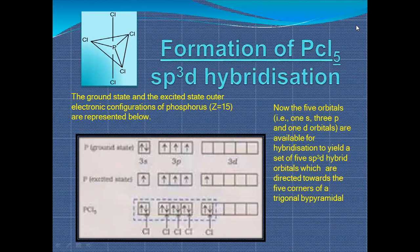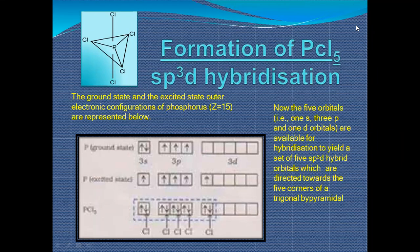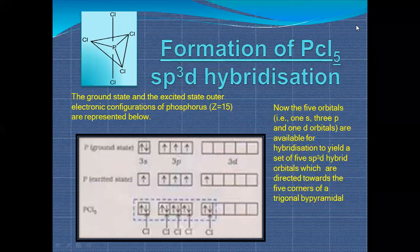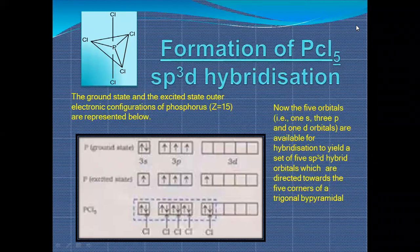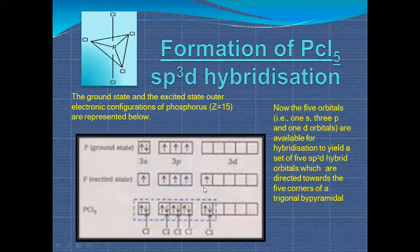Now let's understand sp3d hybridization with the example of PCl5. There are two types of electronic configuration: ground state and excited state. In the ground state, electrons fill normally. In the ground state, the electronic distribution for phosphorus is 3s, 3p, and the d orbital is completely vacant.